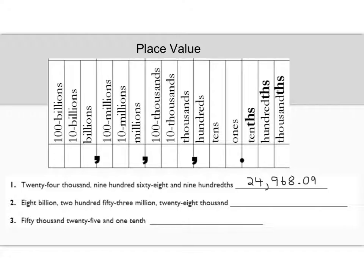Let's take a look at number two. Eight billion. So that's going to be here with a comma. Two hundred fifty-three million, comma. Twenty-eight thousand. So there's no hundred thousands, but there is twenty-eight thousand. And there are no hundreds, tens, or ones, so it's going to be zero, zero, zero. And there's no decimal, so we'll just put .0.